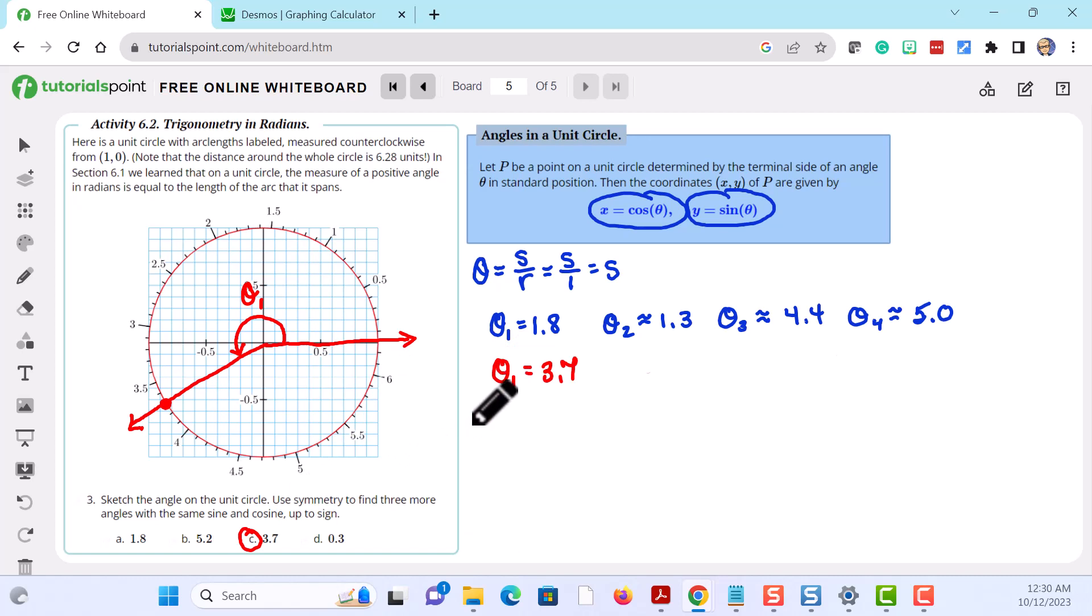Now we want to come up with three more angles with the same sine and cosine. So we need to make sure that they have either the same or opposite x and y coordinates. So if we go vertically up we see that we get to about 2.6. If we go horizontally across we get to about 5.7.